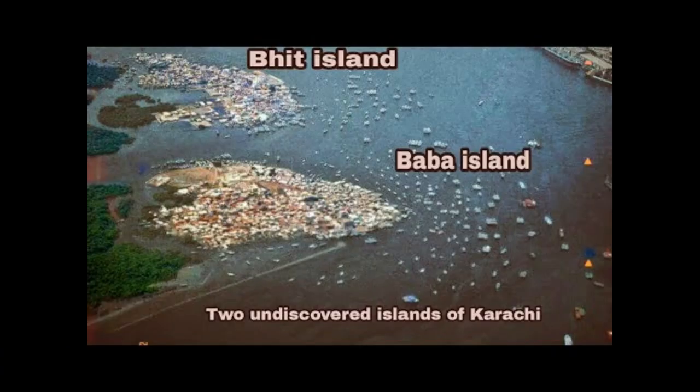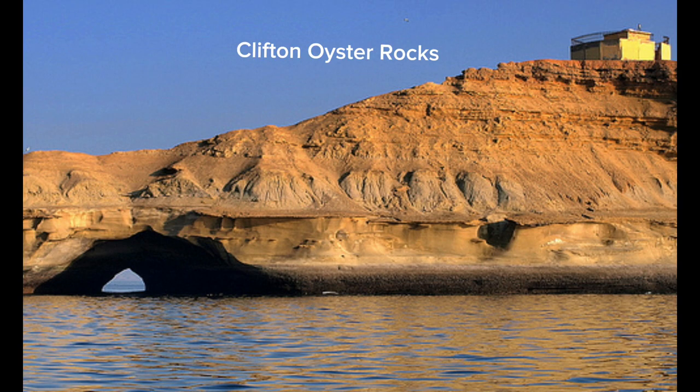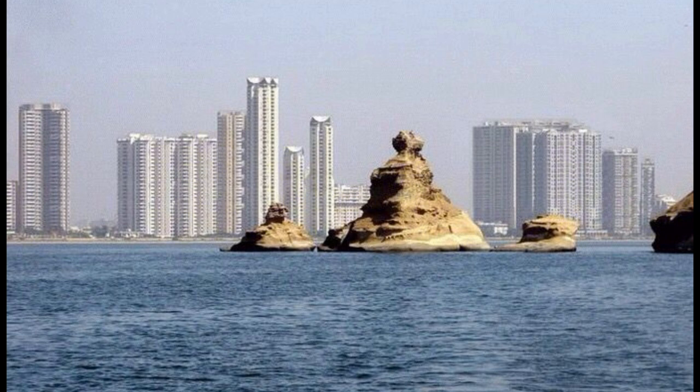Baba and Bid Islands, located near Karachi, are part of the Baba and Bid archipelago. Clifton Oyster Rocks — while not a traditional island — are rocky outcrops off the coast of Clifton in Karachi.